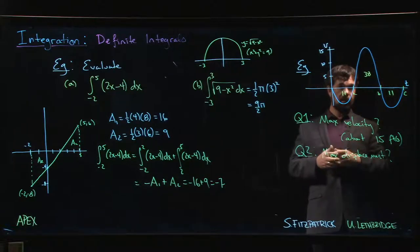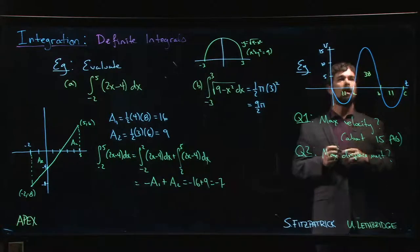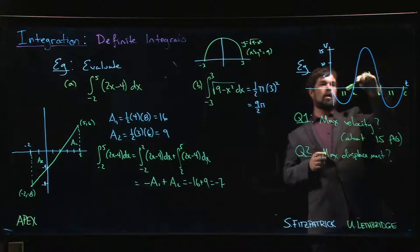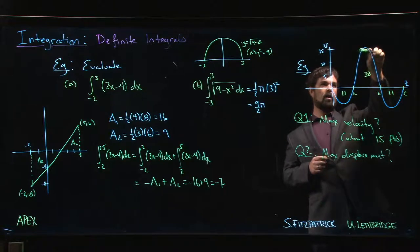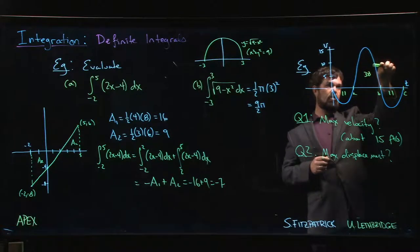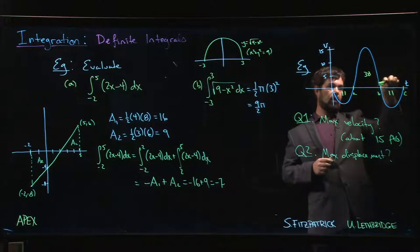Acceleration happens to be zero up there. V prime is zero. So we're positively accelerating and then we start negatively accelerating, slowing down until we hit a velocity of zero, and then we start going backwards again.